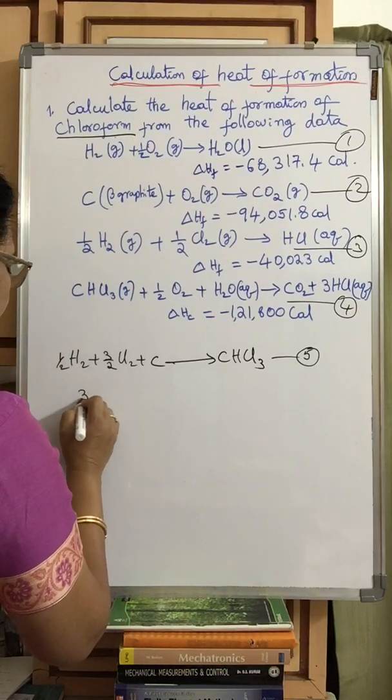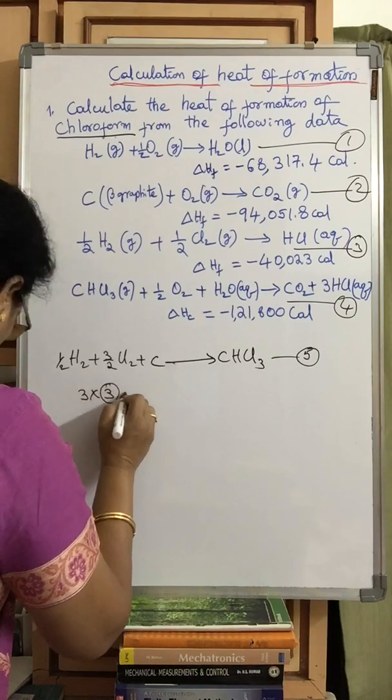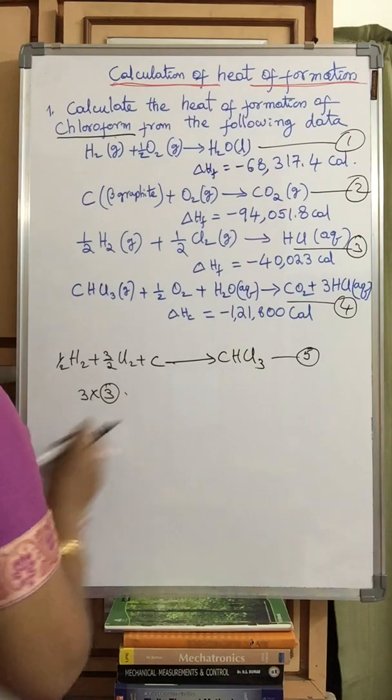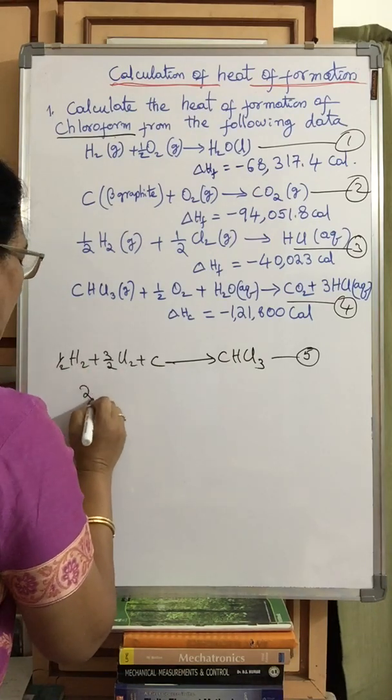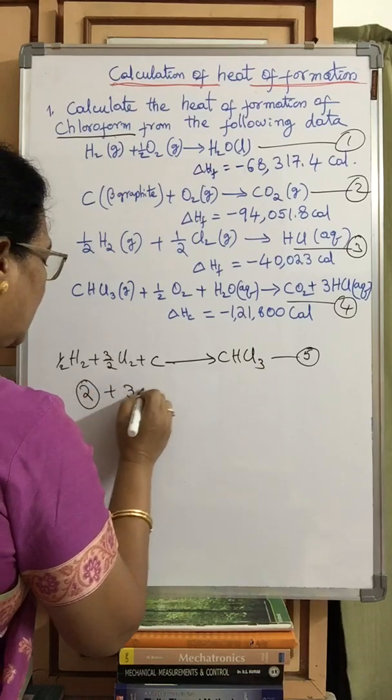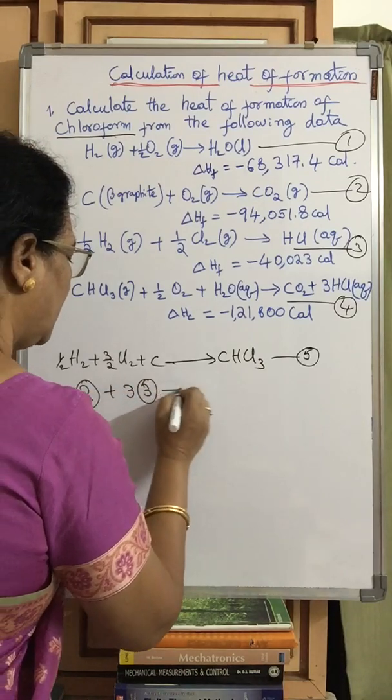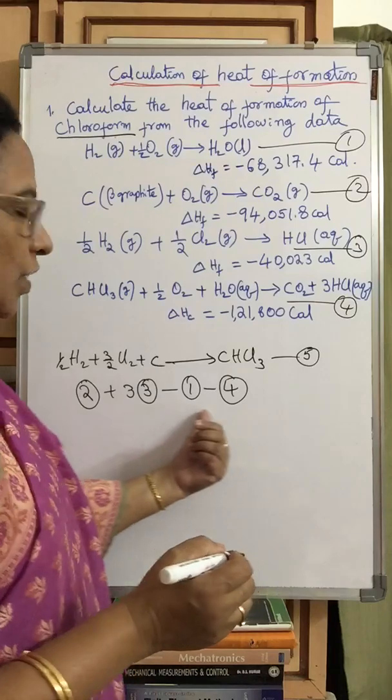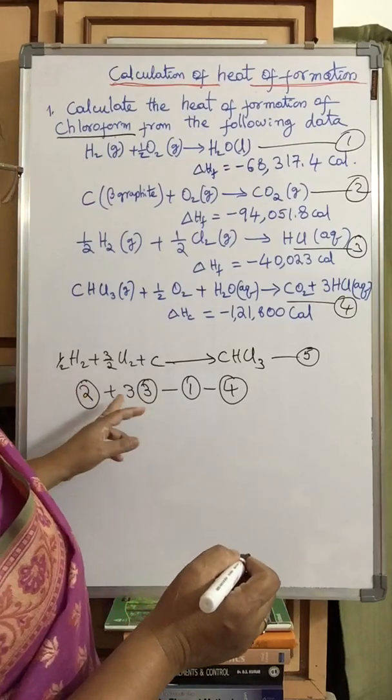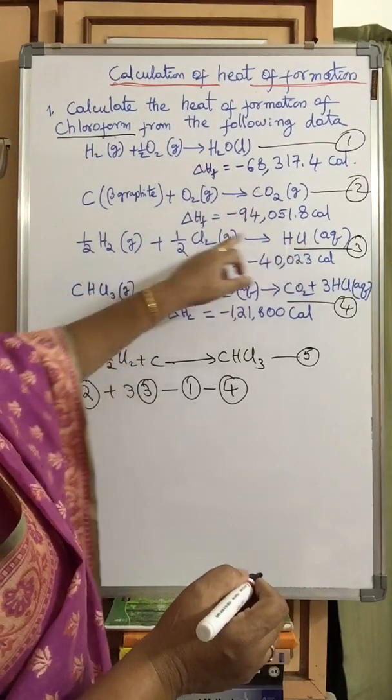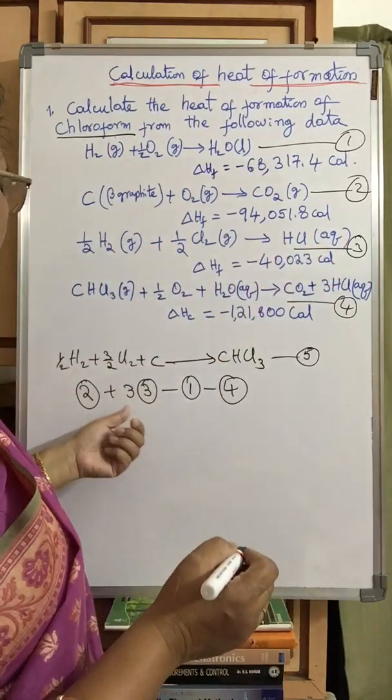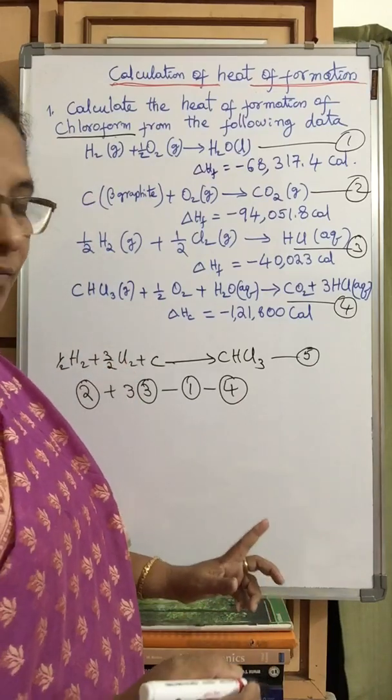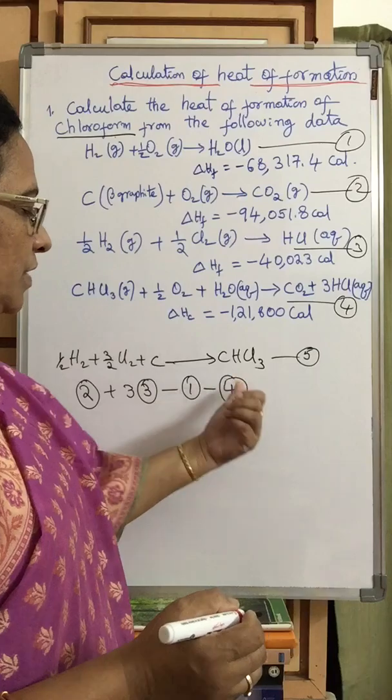That is equation 2 plus 3 into equation 3 minus 1 minus 4. By doing this manipulation, multiply equation 3 by 3, the whole thing must be multiplied, and then add to equation 2. Then from the resulting equation subtract 1. Again from the resulting equation subtract 4.